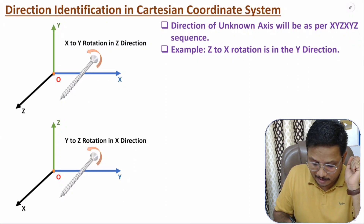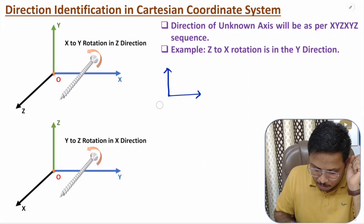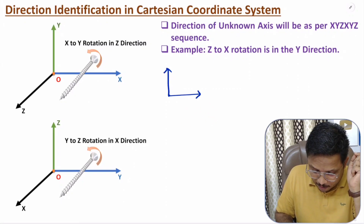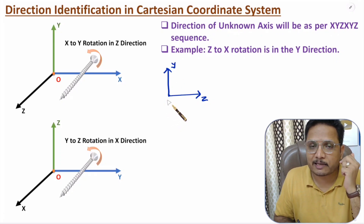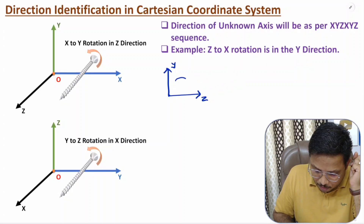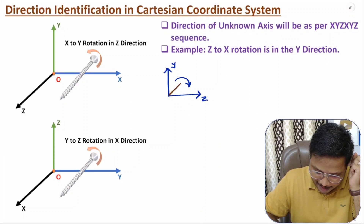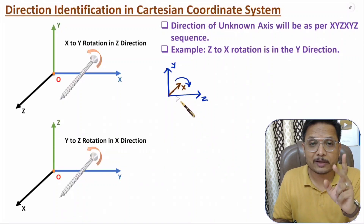Let me take one example. Here we have three axes, but I don't know what the direction of the unknown axis is. Let us say we have Z over here and Y over here — what should be the direction of the X axis? We need to rotate from Y to Z to get the X axis. If you rotate from Y to Z, the screw moves in this direction, so this is the direction of the unknown X axis. That is how one can identify an unknown axis direction.